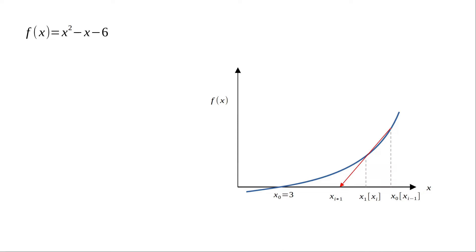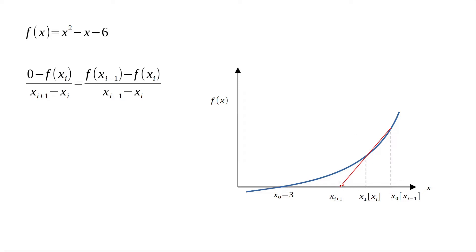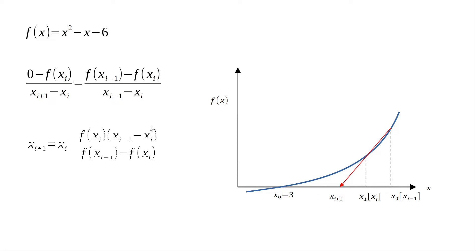This is how we do it visually, but analytically: (0 - f(xᵢ)) / (xᵢ₊₁ - xᵢ) gives the slope of one portion of the secant, which equals (f(xᵢ₋₁) - f(xᵢ)) / (xᵢ₋₁ - xᵢ). We rearrange this equation to get a formula to estimate xᵢ₊₁.